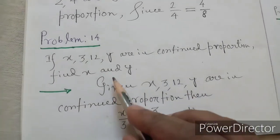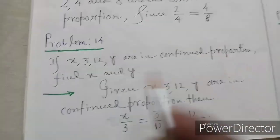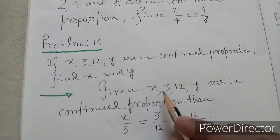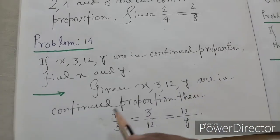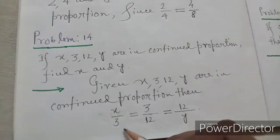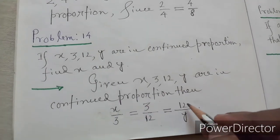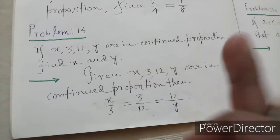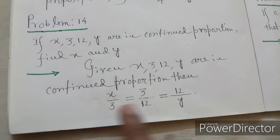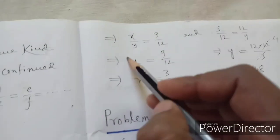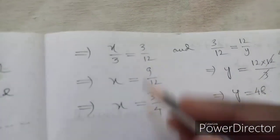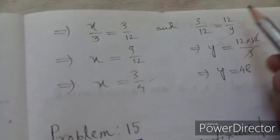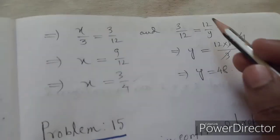Problem number 14: if x, 3, 12, y are in continued proportion, find x and y. Since they are in continued proportion: x/3 = 3/12 = 12/y. From x/3 = 3/12, we get x = 3/4. From 3/12 = 12/y, we get y = 48.